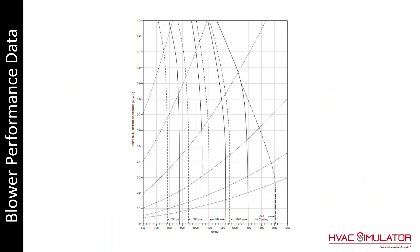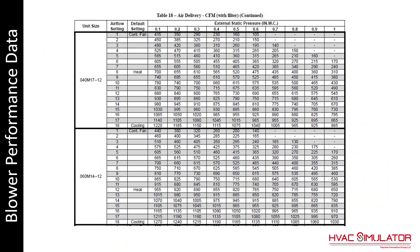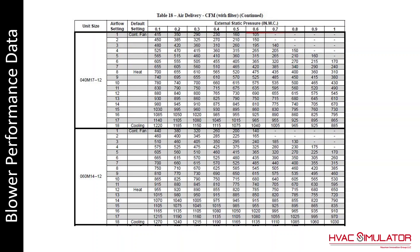Here's a graphical representation of blower performance data used on the air handler. External static pressure is on the vertical axis and CFM is on the horizontal. Another manufacturer has external static pressure on the top with 18 blower speeds, and the CFM values are in the body of the chart.